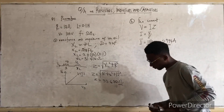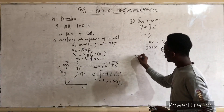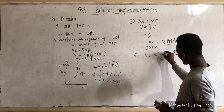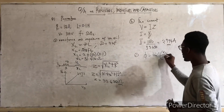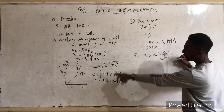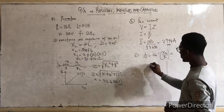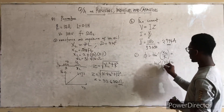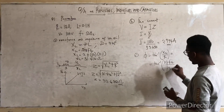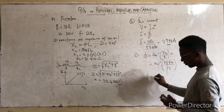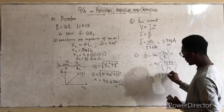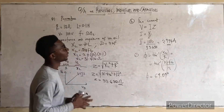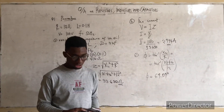The last part asks for the phase angle between the current and the applied voltage. The phase angle φ = tan⁻¹(XL / R) = tan⁻¹(31.416 / 12). When you calculate this, the phase angle becomes 69.09 degrees.